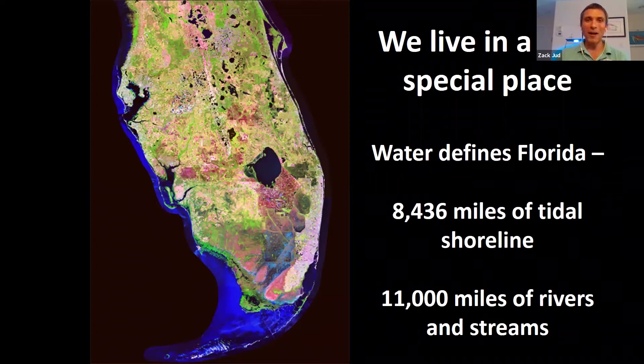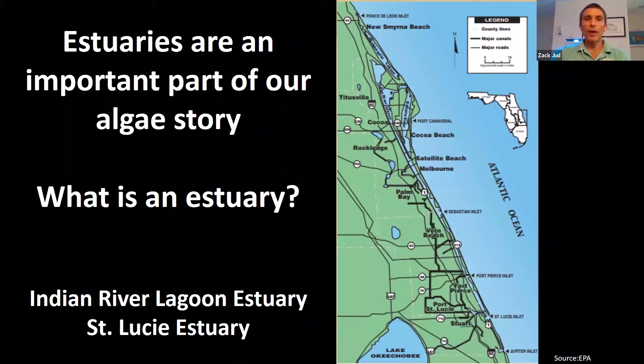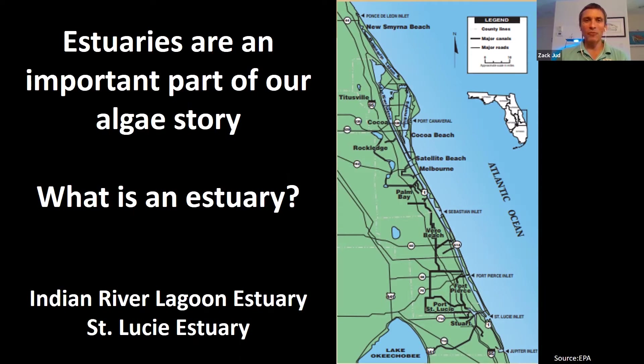We've got this wonderful state, but it's dealing with some pretty big environmental issues, and many of those revolve around algae and algae blooms — that's a major focus of our presentation today. Many of those algae issues are impacting our coastal estuaries. An estuary is a coastal body of water, and we have a lot of them in our part of Florida. I'm coming to you from my home in Fort Pierce, and Florida Oceanographic Society, located in Stuart, and both towns are built right on an estuary.